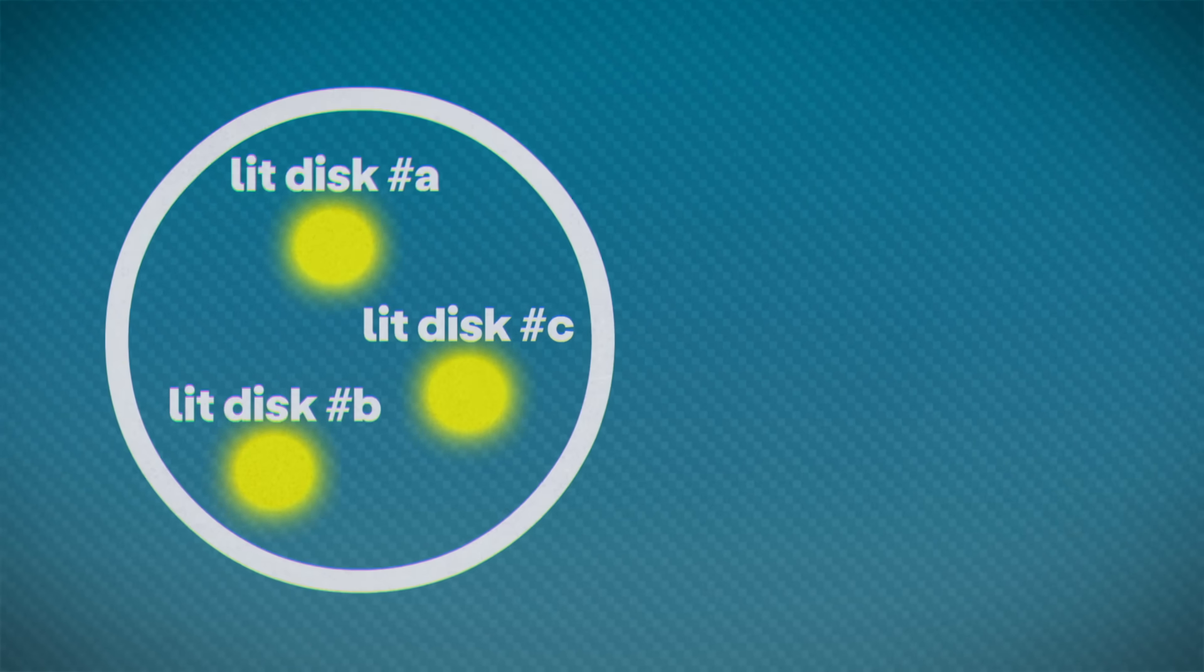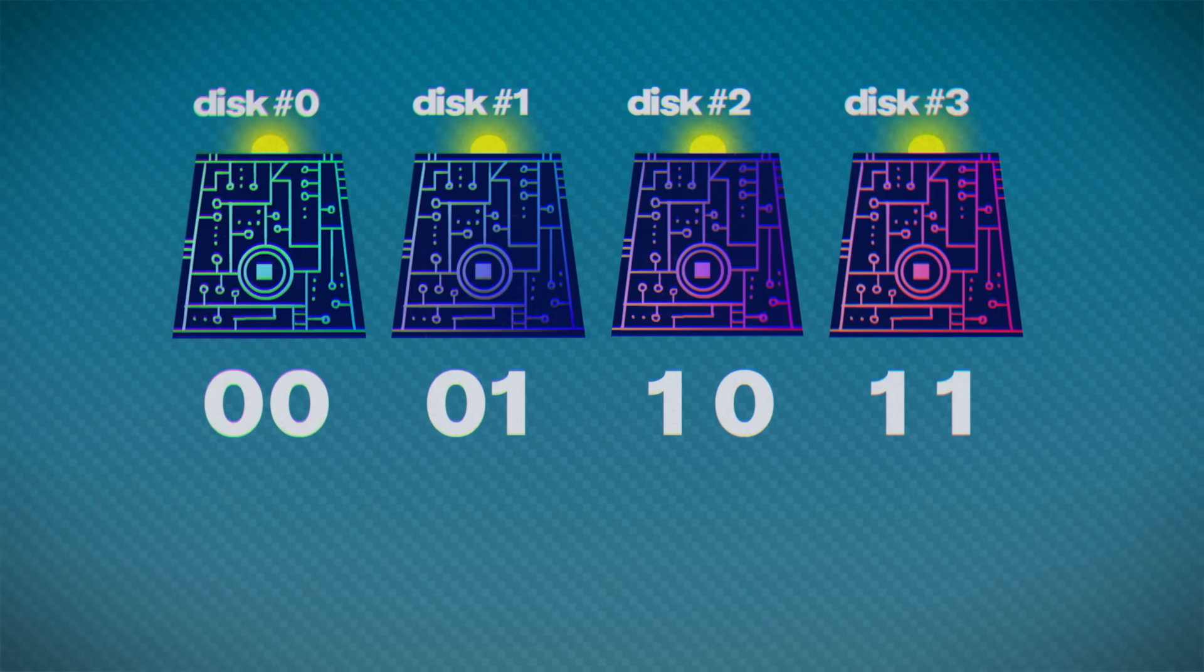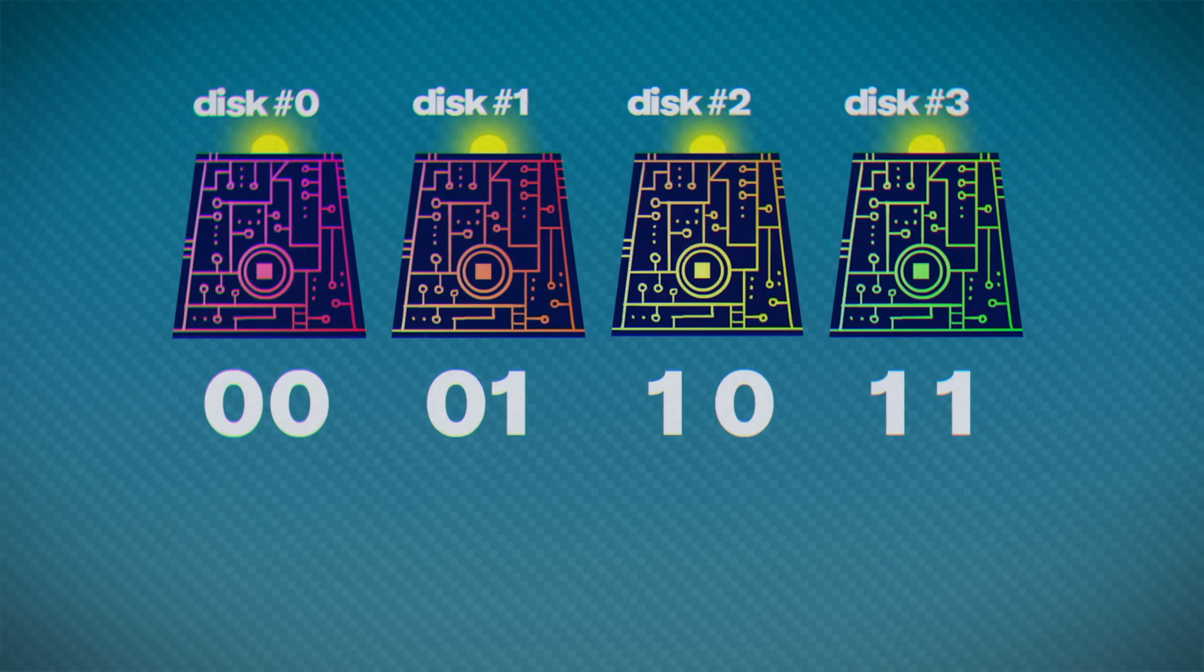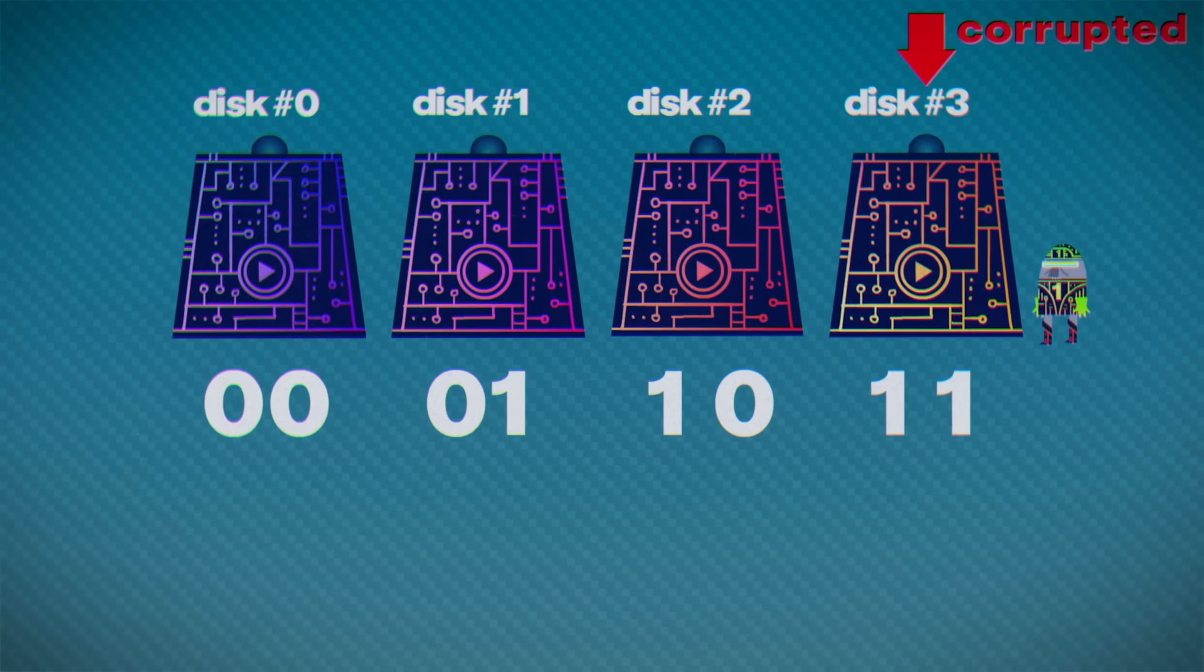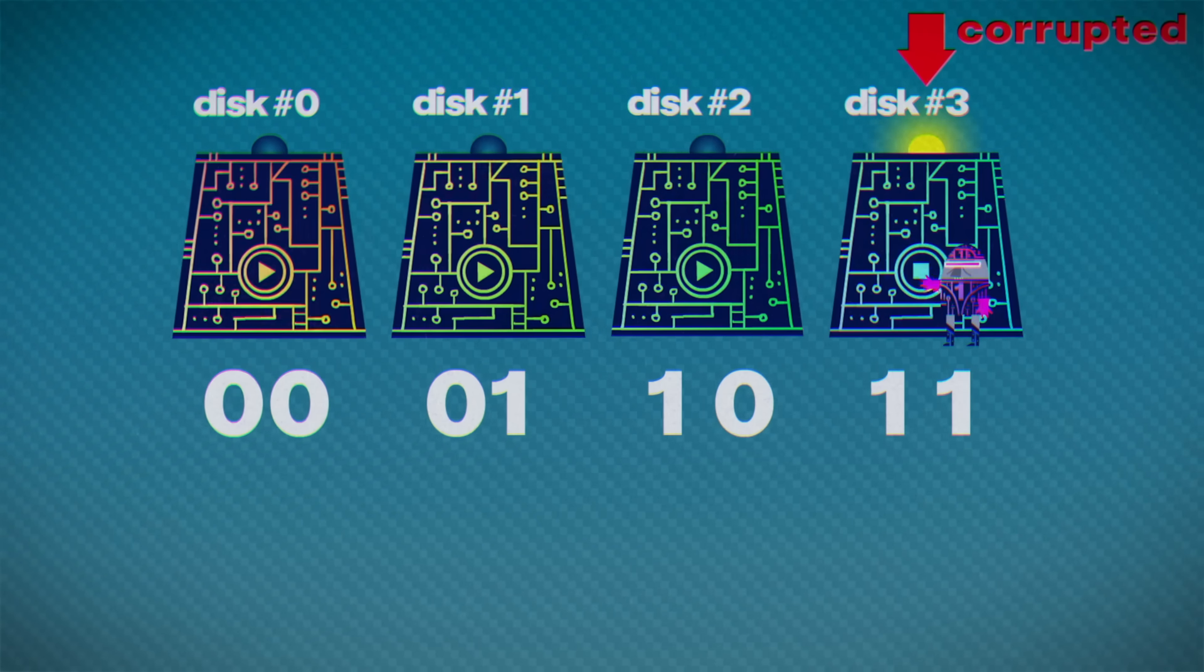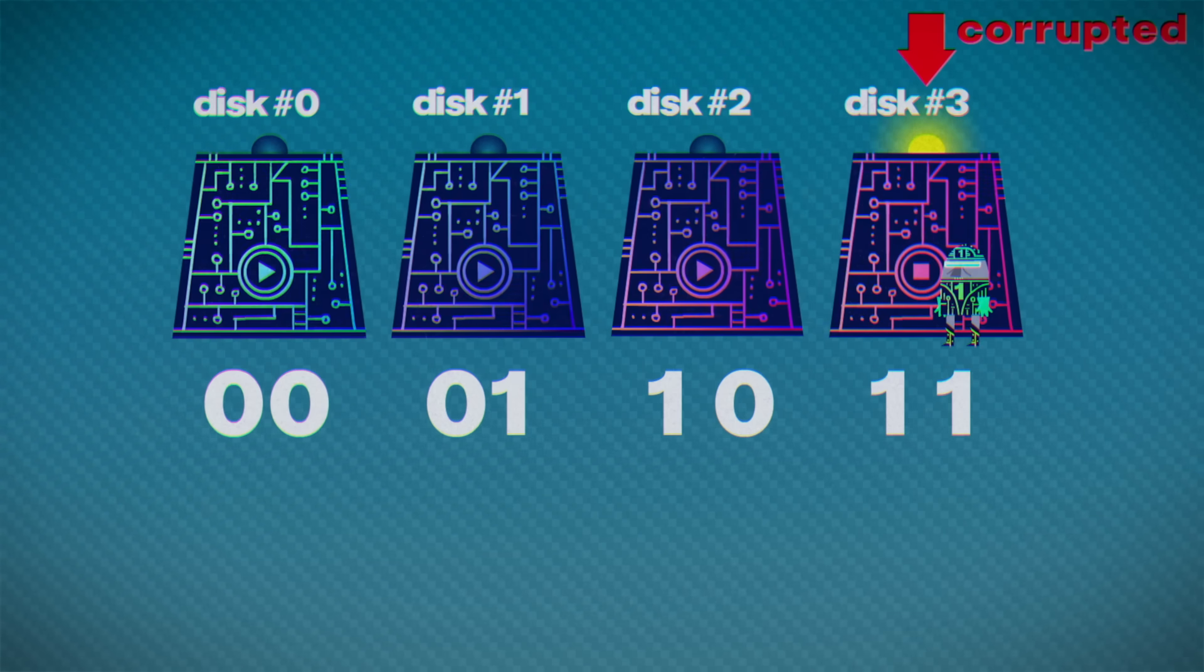What we're looking for now is some sort of mathematical operation that can take the lit disks as input and give the corrupted disk as an output. Let's consider one possibility. Say that the corrupted disk was this one, and when you come in, no lights are on. You could turn one-one on to indicate that disk.